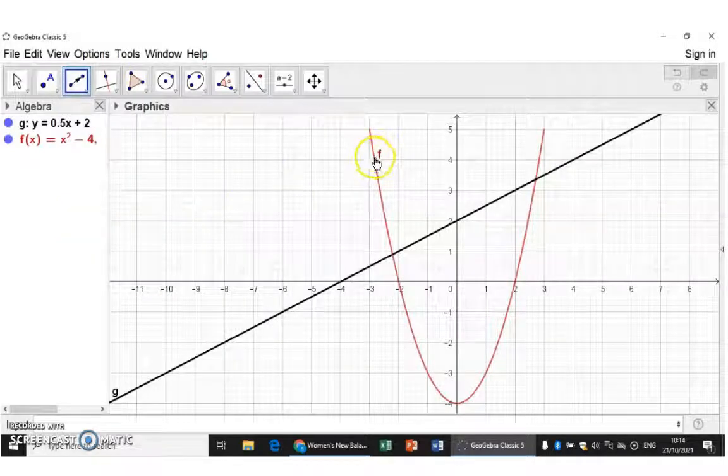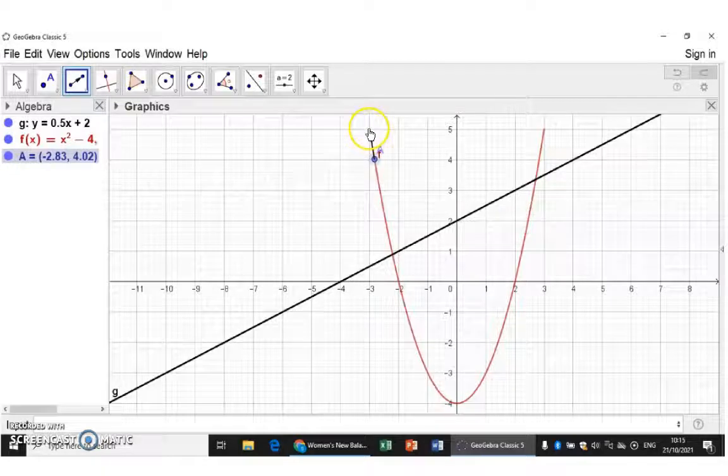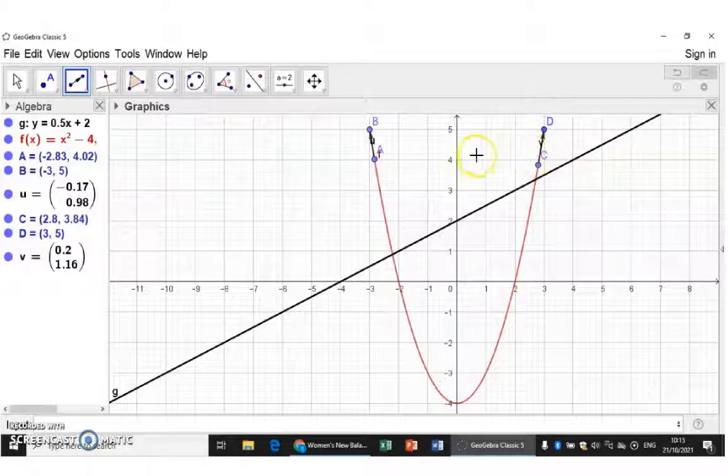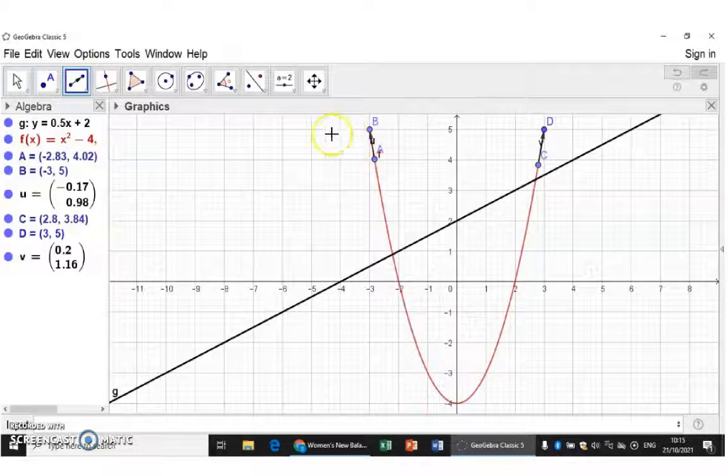So I'm going to add a vector on the left from there to there, and then I'm going to repeat that on the right. These two vectors now have coordinates and names and I'm going to change all of that.